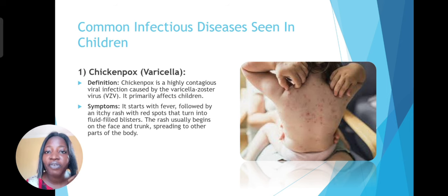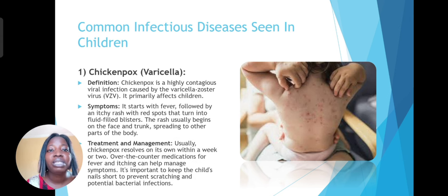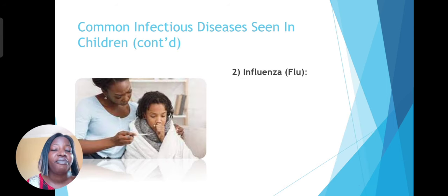How is chickenpox treated? Usually it resolves on its own within a week or two. OTC medications are used to stop the fever and itching. But it's important to keep your child's nails short so it doesn't injure the child or cause potential bacterial infections. The next one is flu, influenza, which is a contagious respiratory illness caused by the influenza virus. Symptoms include fever, cough, sore throat, stuffy nose, and the rest. OTC medications are also used, along with hydration, and antiviral drugs may be prescribed in severe cases.